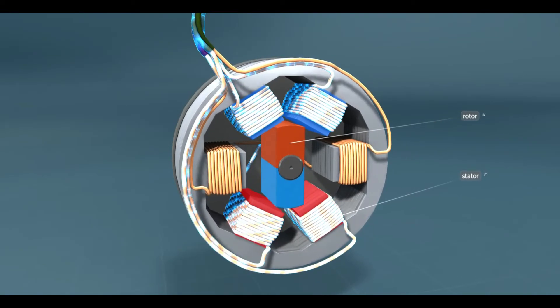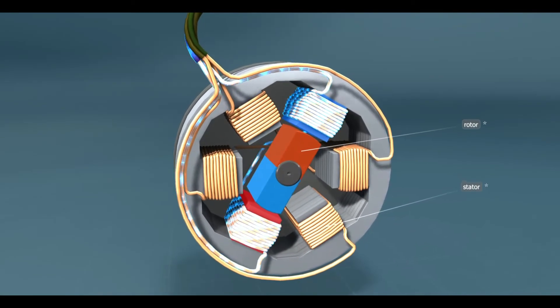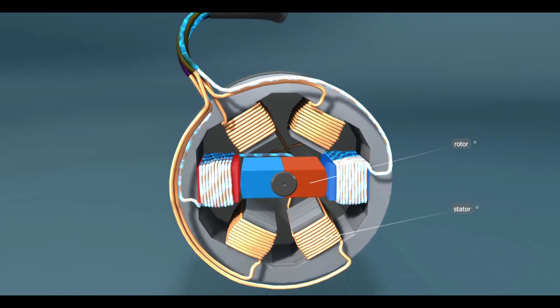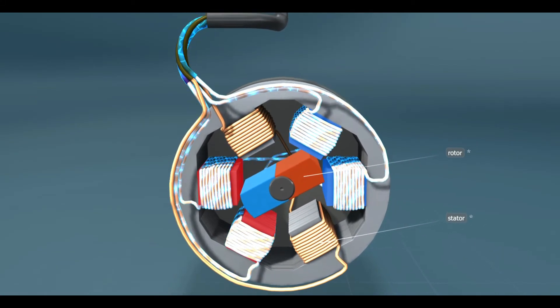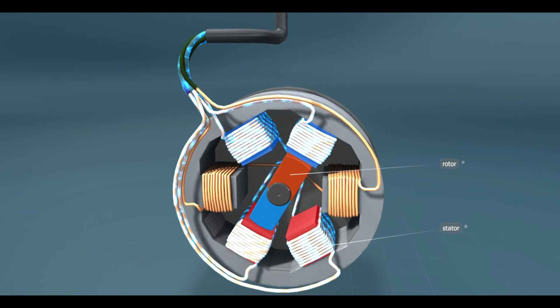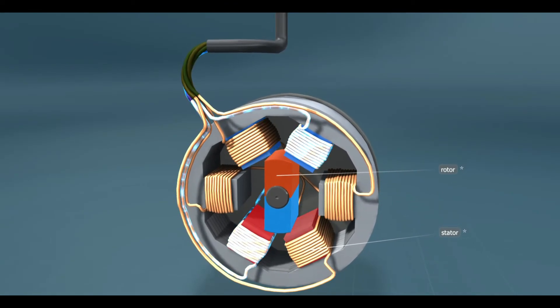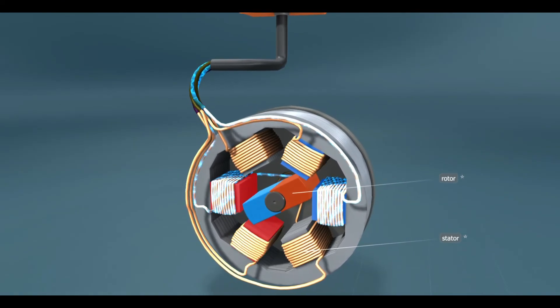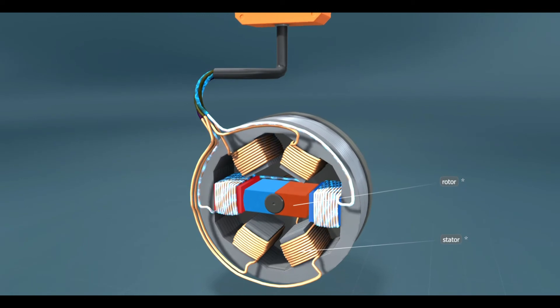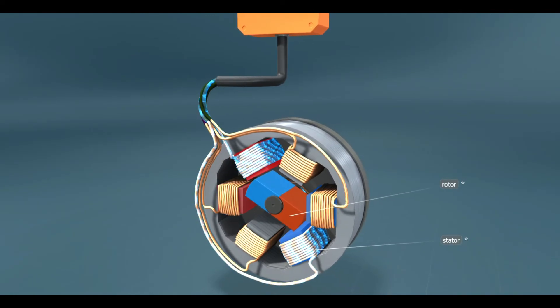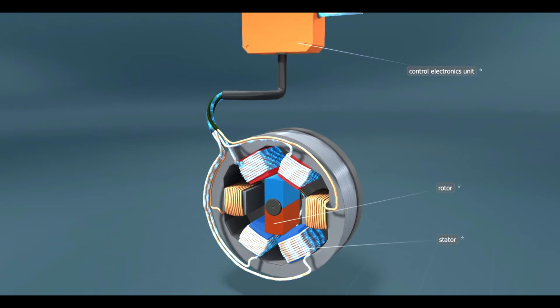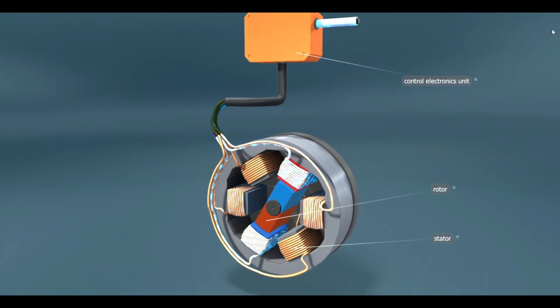Stepper motors are useful in devices where it is necessary to know the exact angle, or step, by which the motor rotates as a result of a certain amount of electric current. Such motors move the arms of robots, or the components of photocopiers and printers. The rotor of stepper motors consists of permanent magnets, while the stator is made up of electromagnets. The electromagnets of the stator are supplied with current separately by the control electronics according to the desired angle.